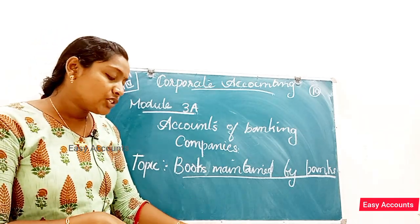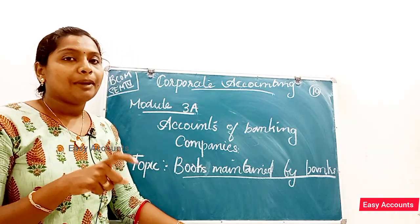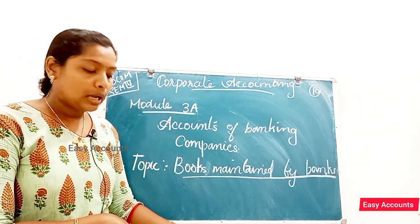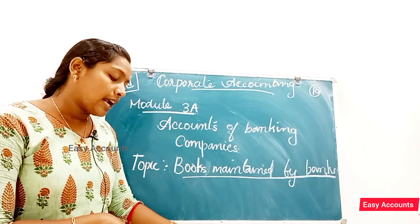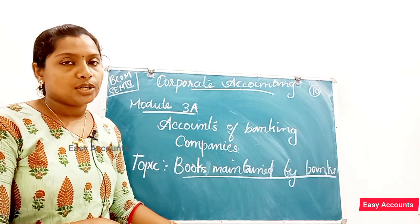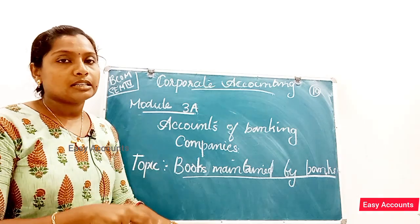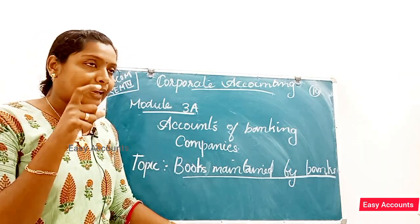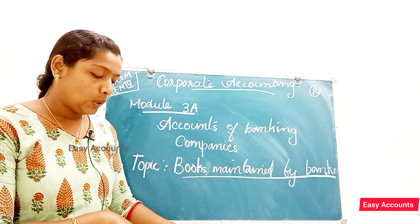This is the Ledger and Register section. The book is called Ledger. One ledger is the current account ledger. It records the transactions of those customers who opened a current account.